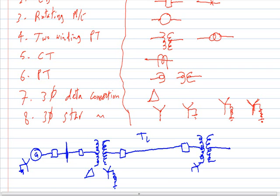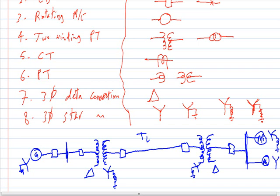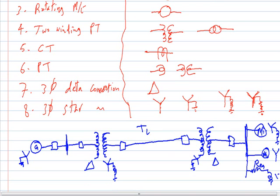Then we have a step-down transformer with the star winding grounded through a resistance and a delta winding on the other side, followed by another circuit breaker, then another bus bar. On the bus bar we have electric motor 1 and electric motor 2. Motor 1 is grounded through a reactor and motor 2 has an ungrounded neutral. Then we have an electric load represented by an equivalent resistance R and equivalent reactance XL. This is the typical power system one-line diagram.